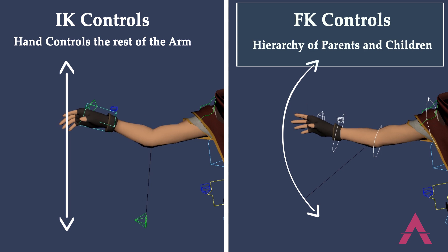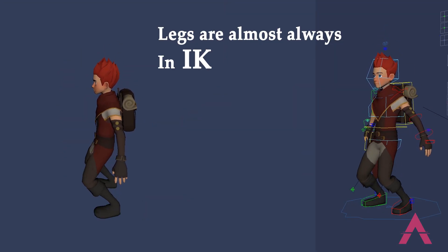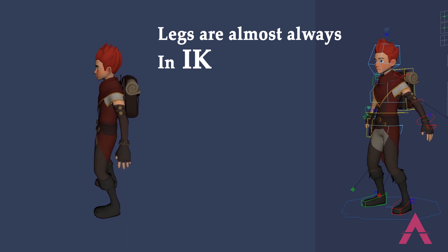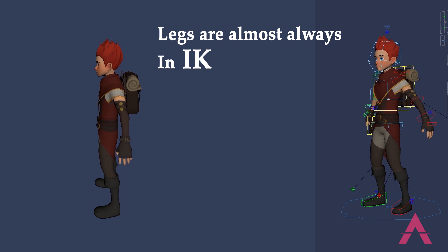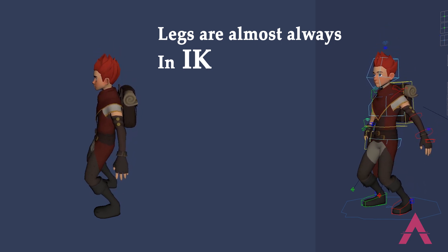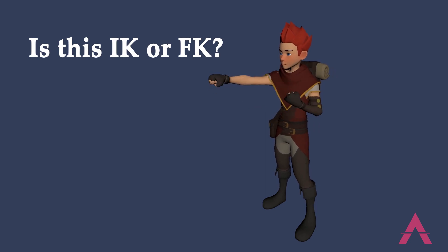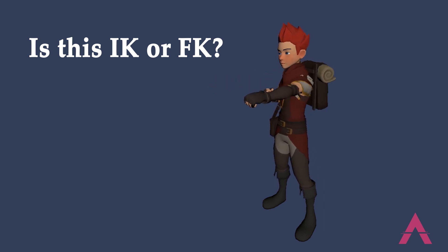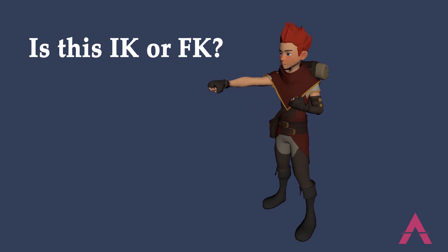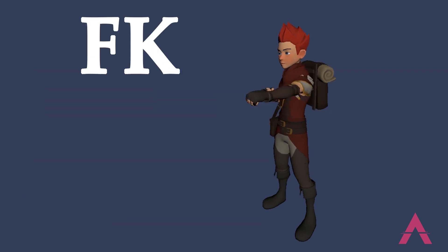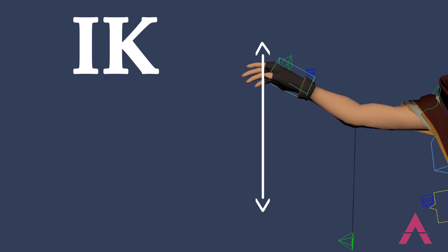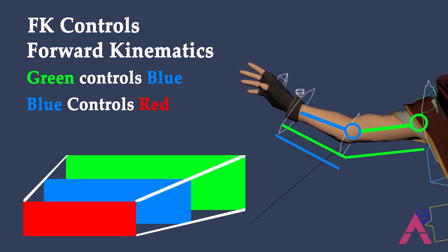So to recap: FK creates an arc, IK doesn't. For legs you almost always need to keep them in IK, unless your character is flying, swimming, or doing a roundhouse kick — something in the air where the legs need to move freely and not be touching the ground. For arms, there are situations where each kinematic shines. If your character is moving their arms during a fight or in a dialogue scene, it most likely needs to be FK — the parent hierarchy chain — which creates a natural curve to reach where the arm needs to go. With FK you have to control each joint individually to reach that point.